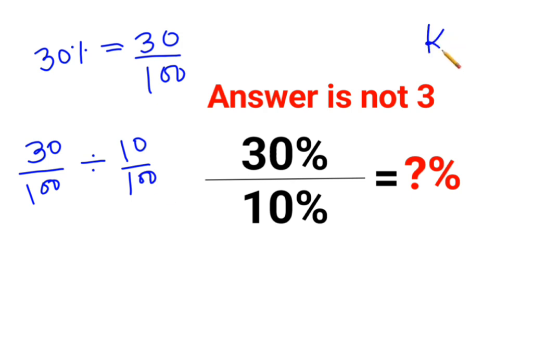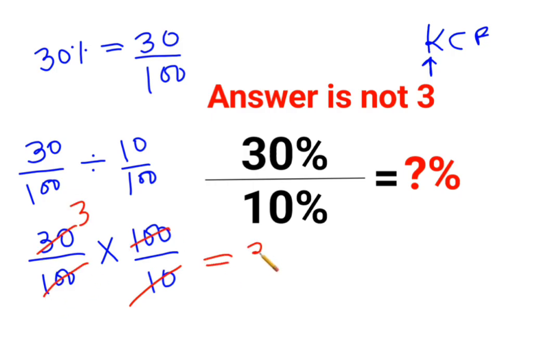Now whenever you have division, you should follow the rule of KCF where K stands for keeping the first number as it is, C stands for changing the division sign to multiplication, and F stands for flipping or taking reciprocal of 10 upon 100 which is 100 upon 10. Again, now everything works fine till here. The ones and threes cancel and the answer comes out to be 3.